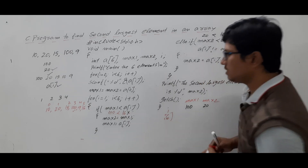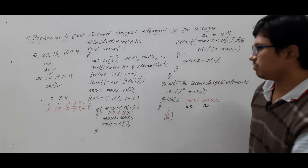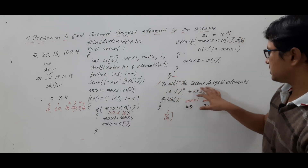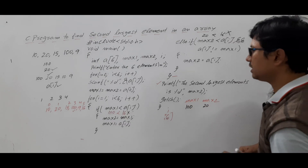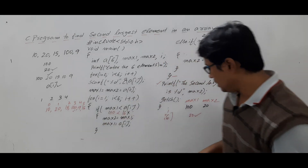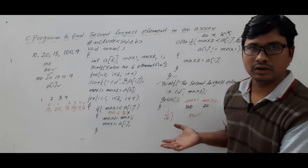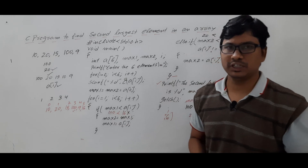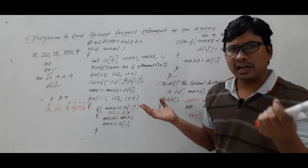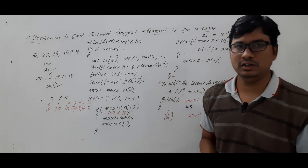i becomes 6. The for loop condition 6 less than 6 is false, so we exit the loop. The next statement prints the second largest element, which is max2 = 20. The output is correct. I hope you understood how this program works. If you have any doubts feel free to ask in the comment section. As a challenge, try to find the third largest element in an array and write the logic in the comments.